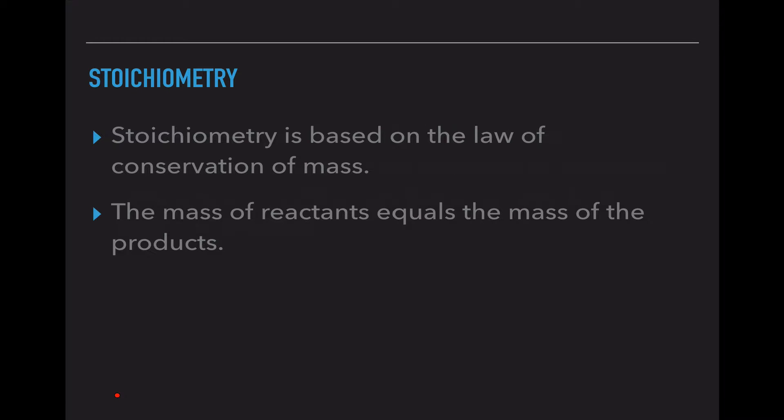So stoichiometry is based on the law of conservation of mass. The idea that the mass that we begin with has to be the same mass that we end with. We can't create or destroy anything, but we can change the chemical compounds that are present in that reaction. So the mass of the stuff before the arrow has to equal the mass of the stuff after the arrow. And if we start with a certain mass before the arrow, we have to end with a certain mass after the arrow.